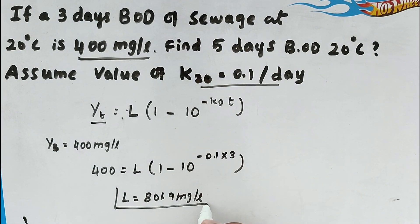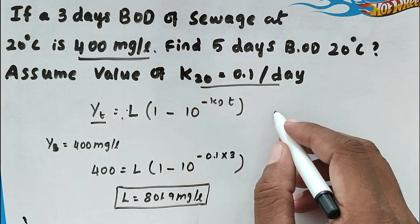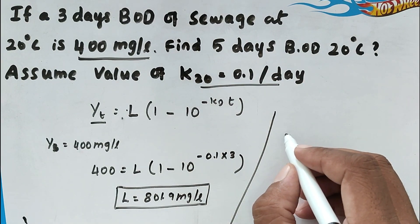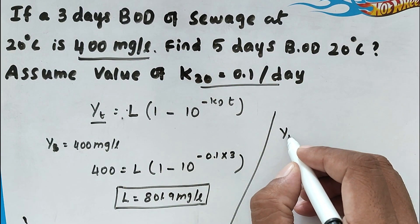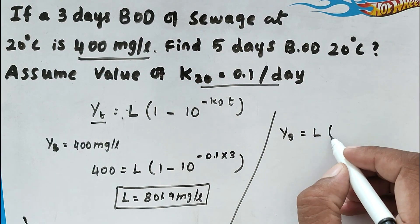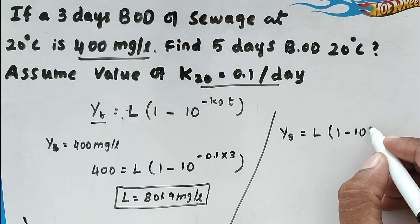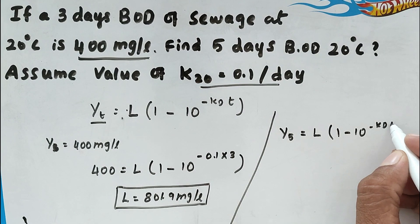So now we find out the ultimate BOD, so after that we can find out the 5 days BOD. So now the same formula: Y 5 days BOD equal to ultimate BOD into 1 minus 10 power minus Kd into T.